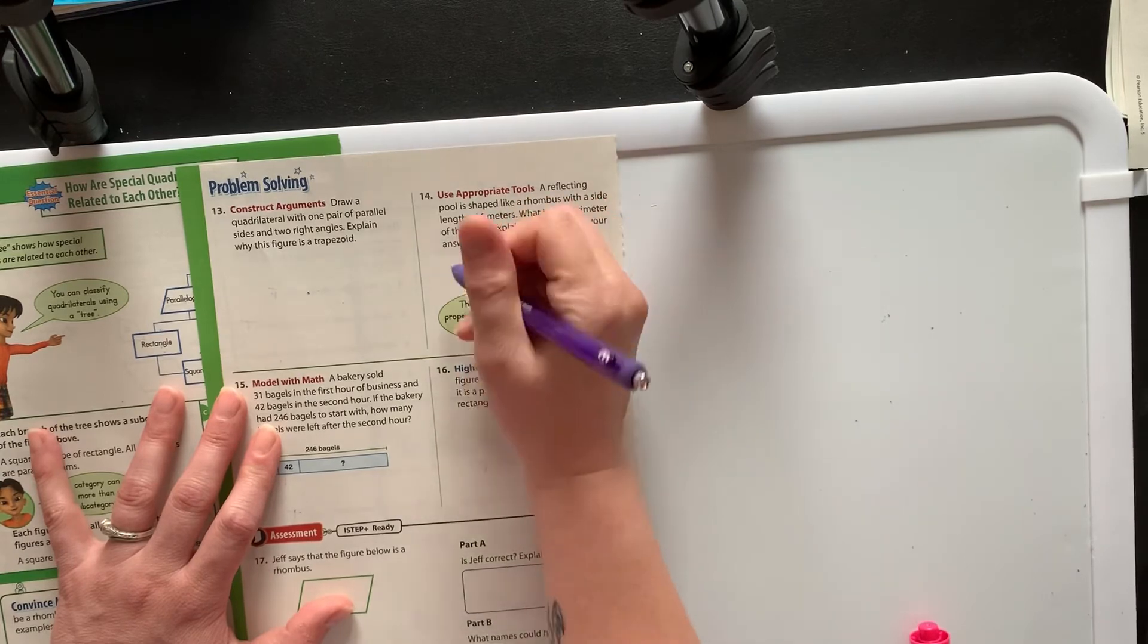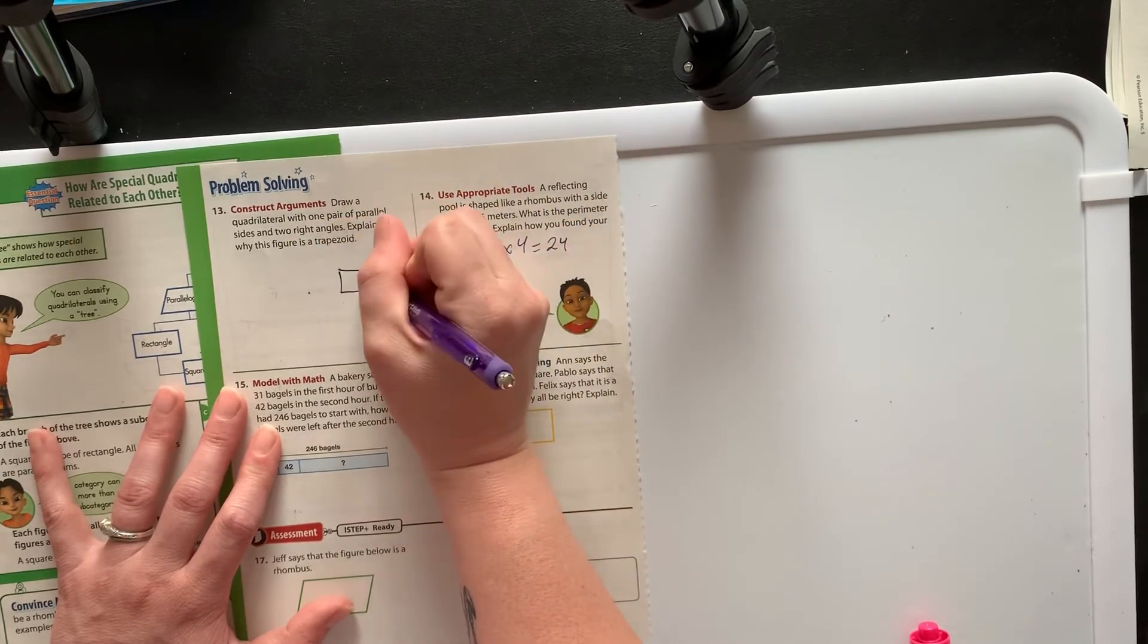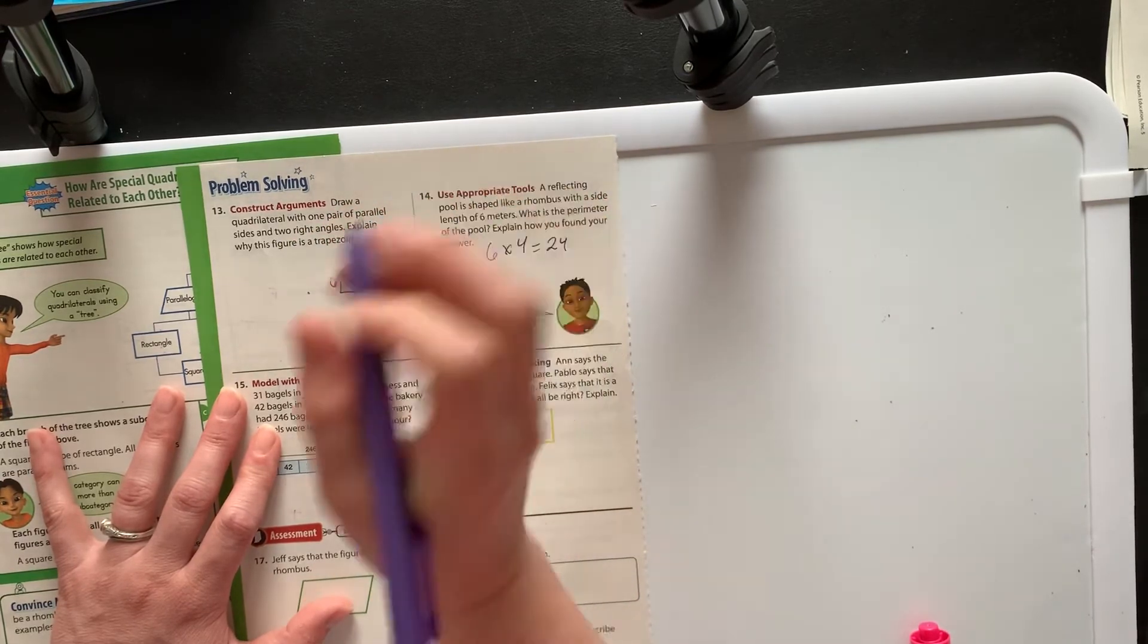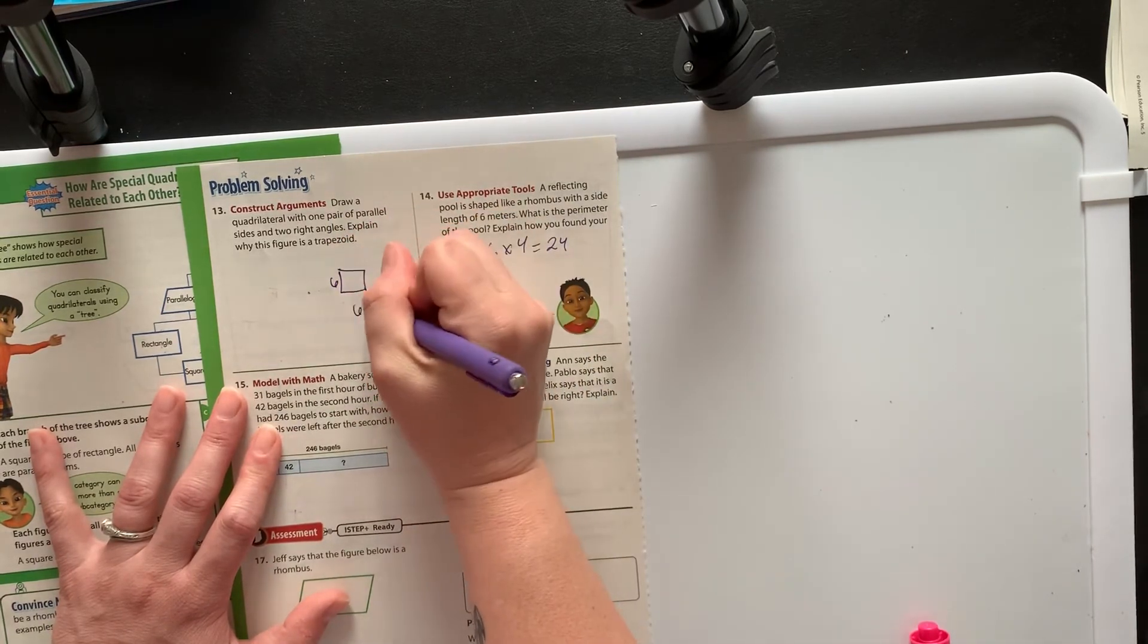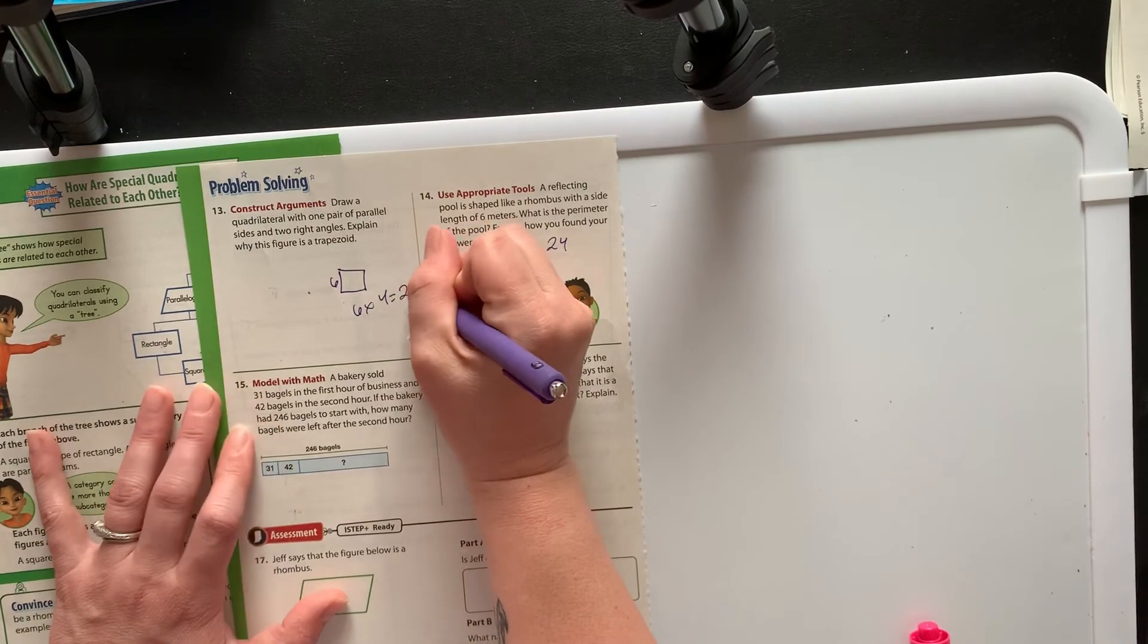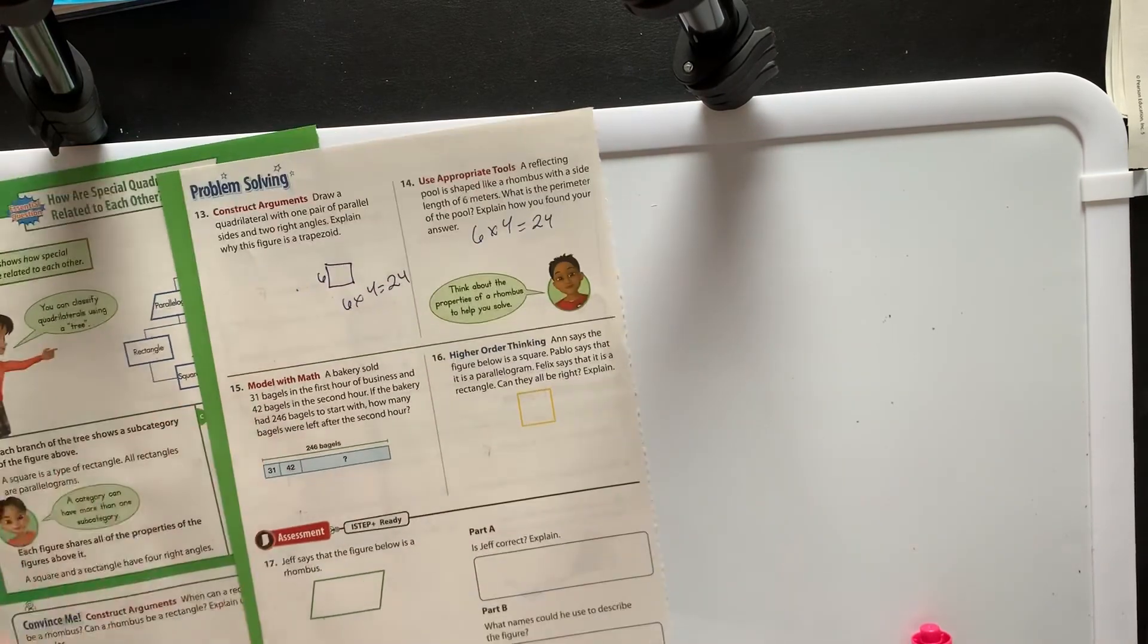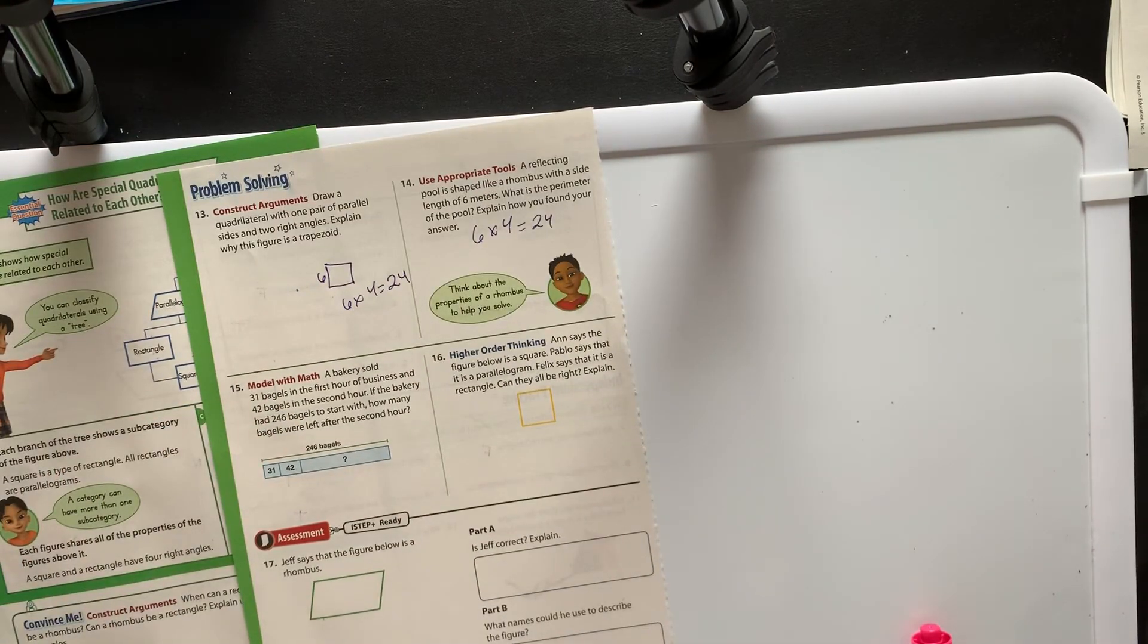I can't tell you how many high stakes tests I've seen where they'll give a kid a square, tell them that this is six, and they're like, what's the perimeter? And the kids are like, I don't know. You just take six times four. 24. That's how you do it. All right, let me know if you have any questions.